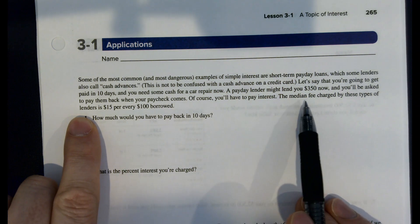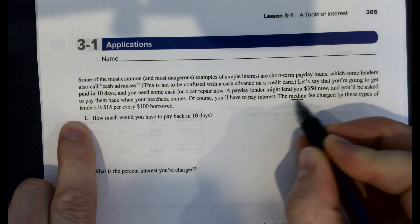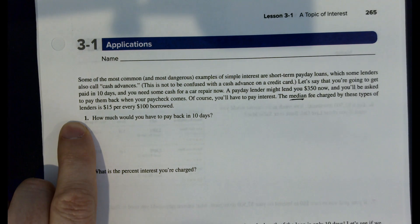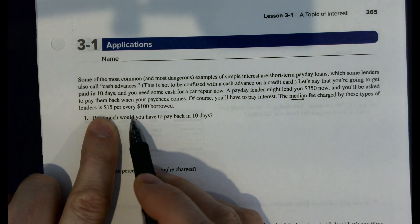There's always going to be some fee with that. The median fee - we're going to learn about this in Unit 4 if you don't know what median is. It's the middle fee. Charged by these types of lenders is $15 per every $100 borrowed.